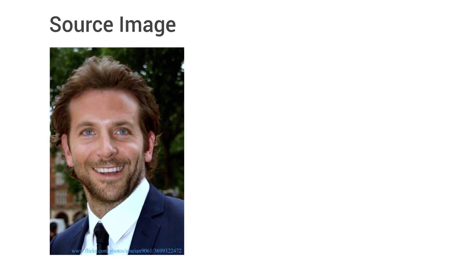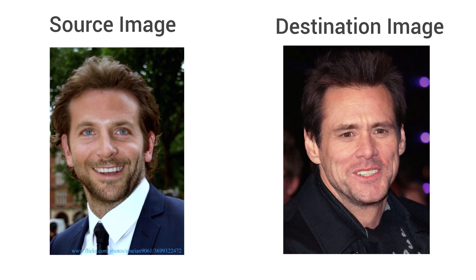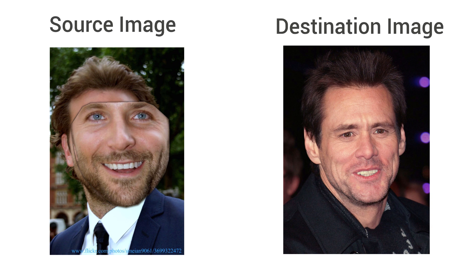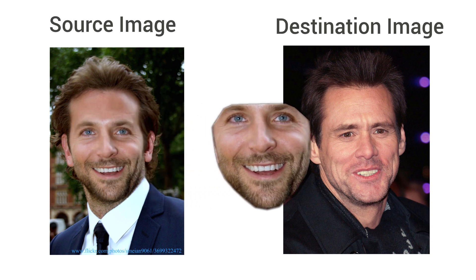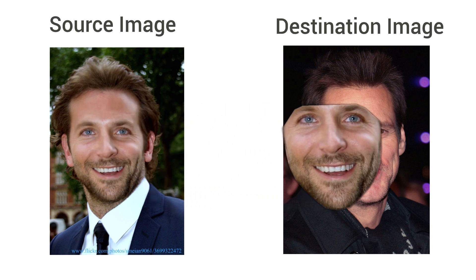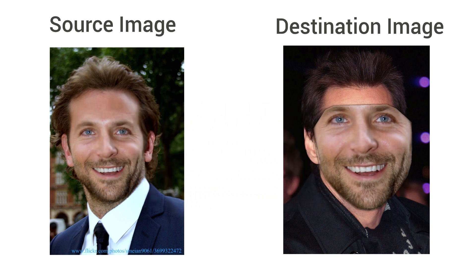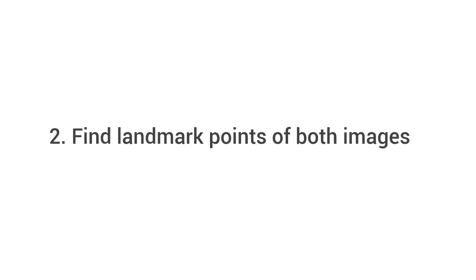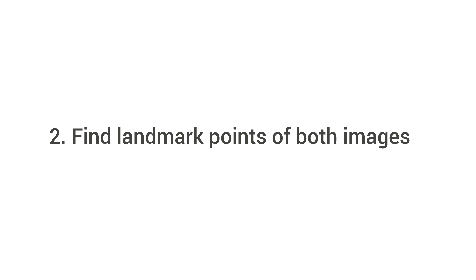First, we take two images: a source image and a destination image. The source image is the one we're taking the face from, and the destination image is the one where we're putting that face. Second, we find the landmark points of both images. We have 68 landmark points that we're going to find using the Dlib library.